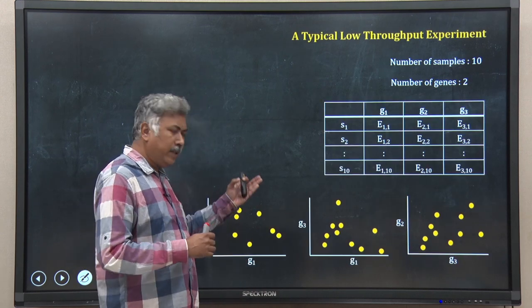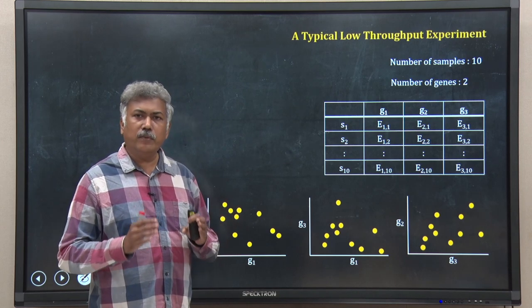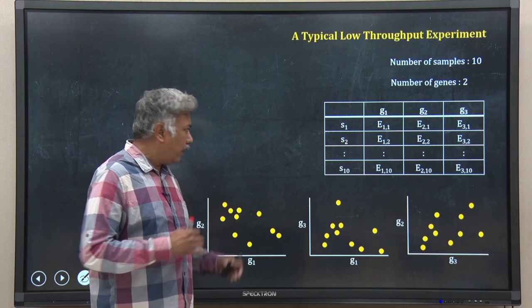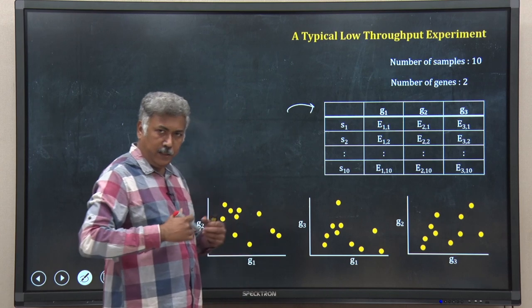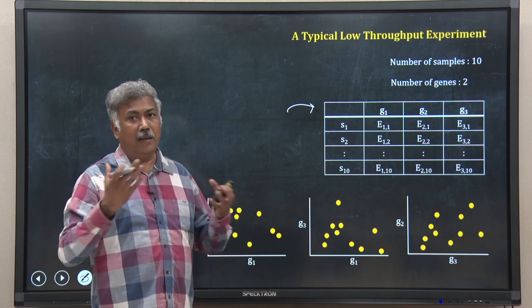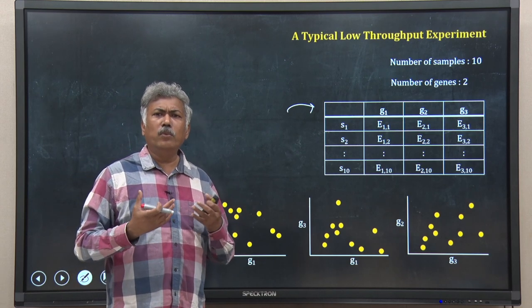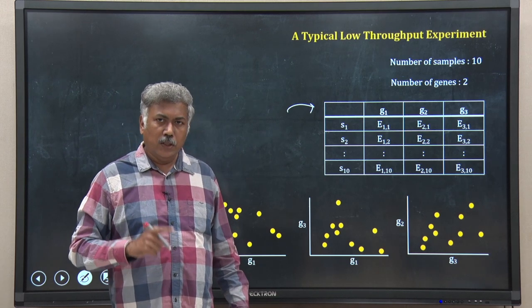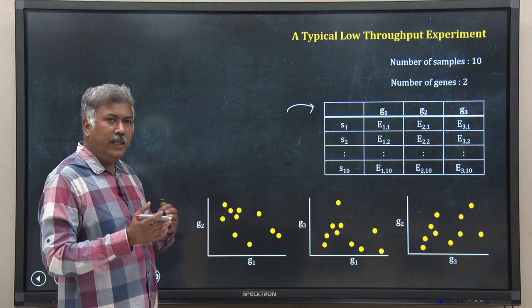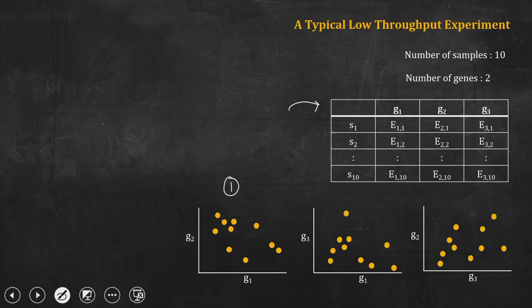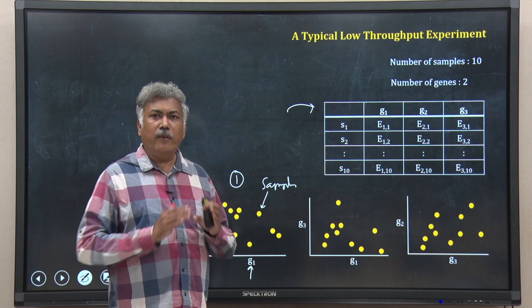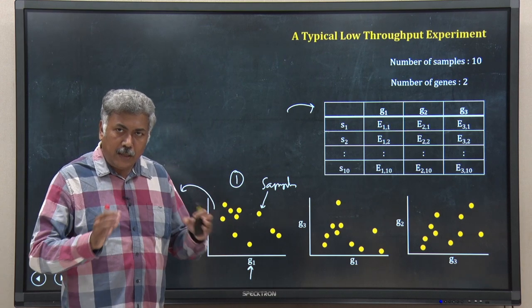I am now doing the same experiment. I have the ten samples, but other than two genes, I am measuring the expression of three genes: G1, G2, and G3. Now I have this tabular data. How should I visualize it? I can visualize in three dimensions at maximum, but usually we feel more comfortable visualizing in two dimensions. So I can take any two of these genes. In this first plot I have taken gene 1 and gene 2 — a 2-D space with one coordinate for G1 and another for G2 — with all ten samples in it.